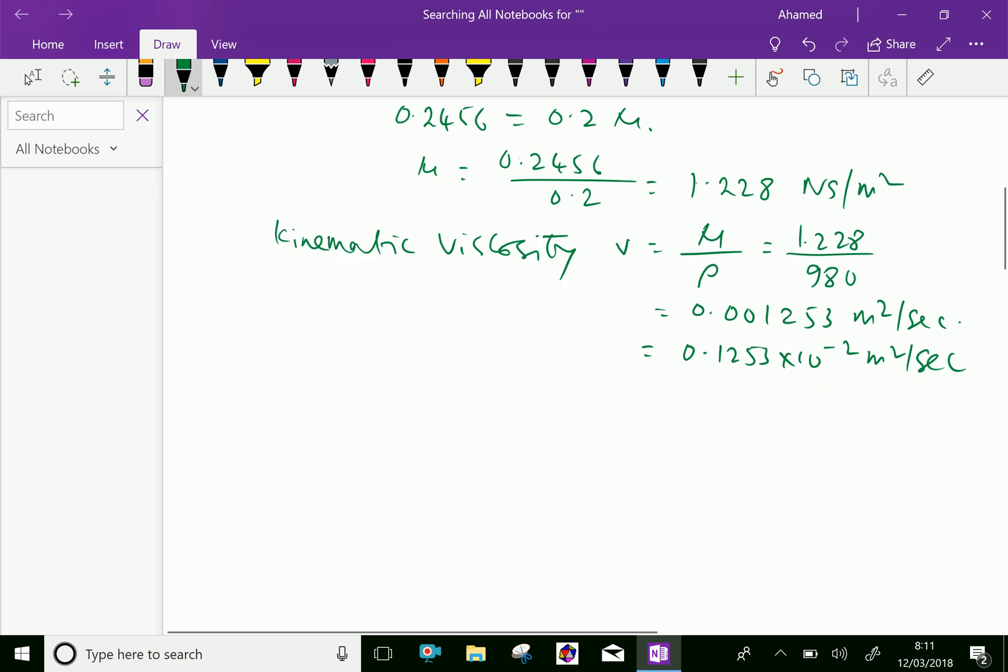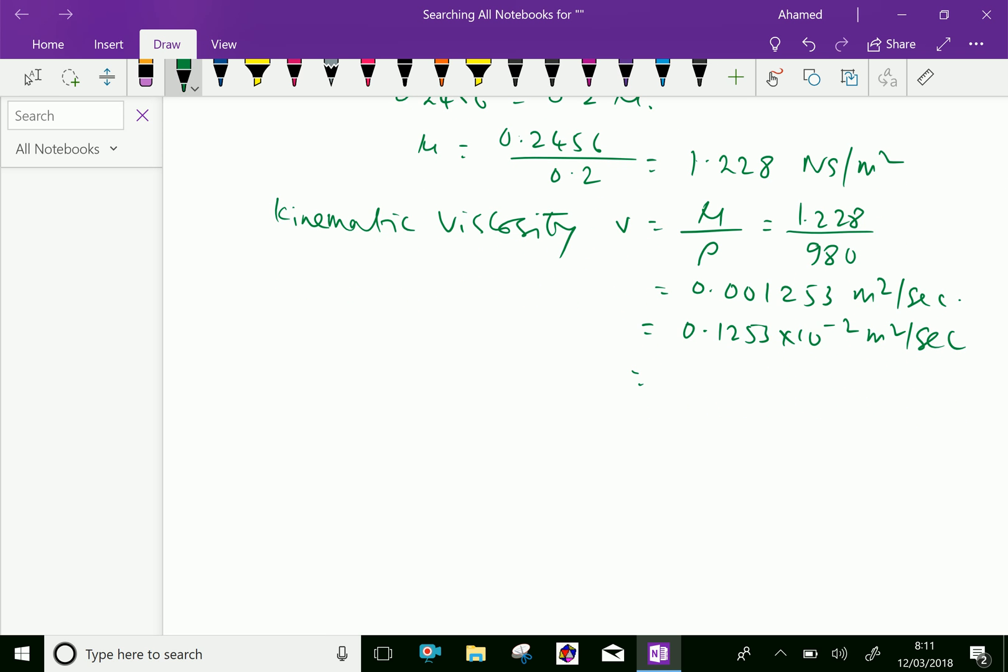We will convert this as 0.1253 into 10 to the power of minus 2 into 10 to the power of 4 meter squared converted as centimeter squared per second.